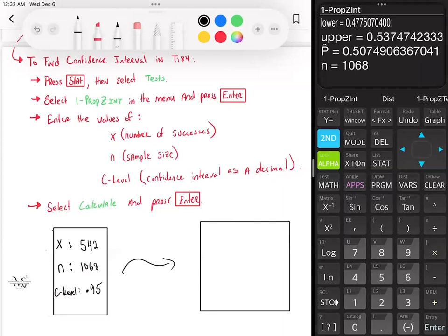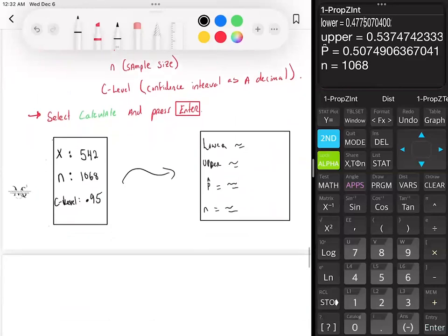So you get these things. You get your lower, and you get your upper. So you have lower is equal to some value, upper is equal to some value. You have P hat equals something, and then N is equal to whatever. First thing to note is that in this problem, part A asks for the best point estimate. So your best point estimate is always going to be your sample proportion, P hat. For P hat is given to you in your table, P hat is going to be, if you round it to three decimal places, 0.507. That's your best point estimate.